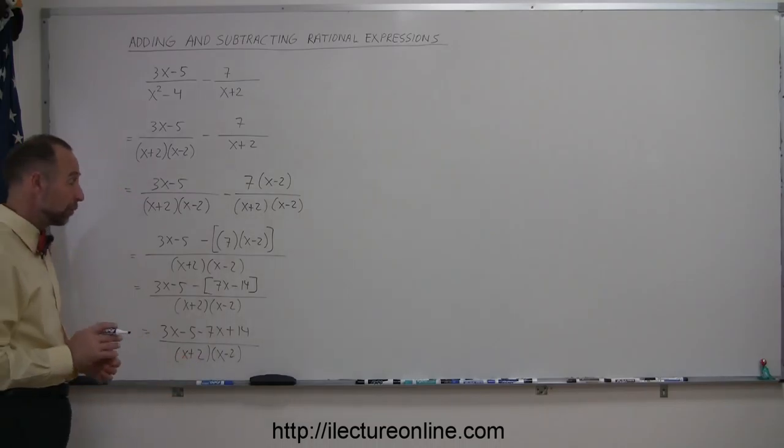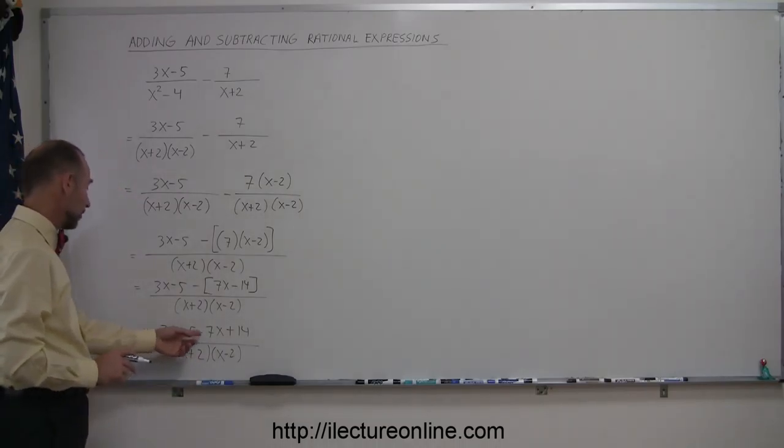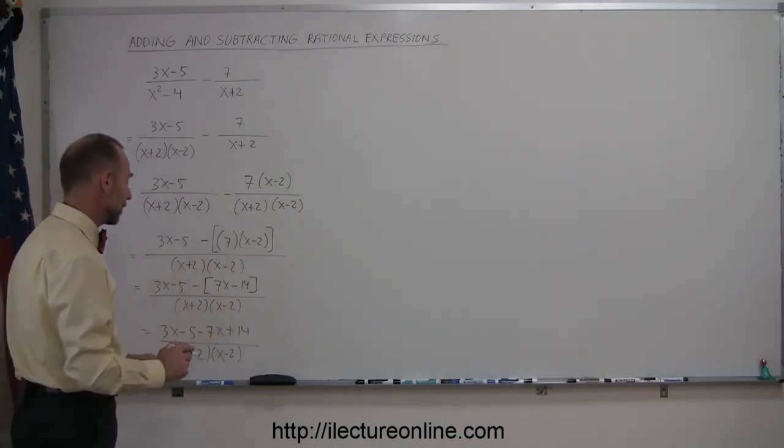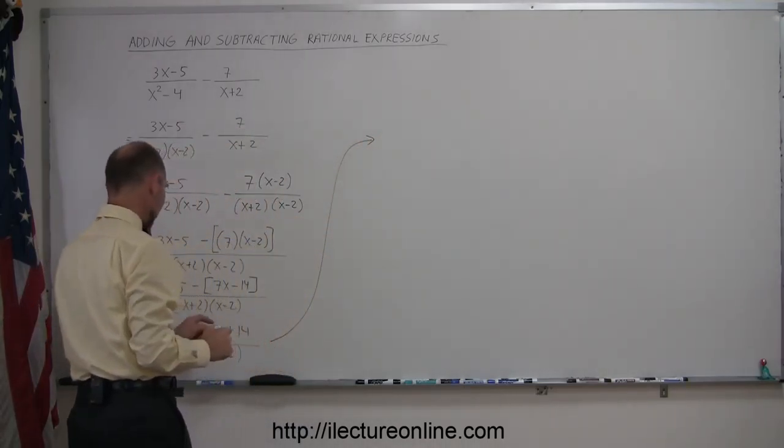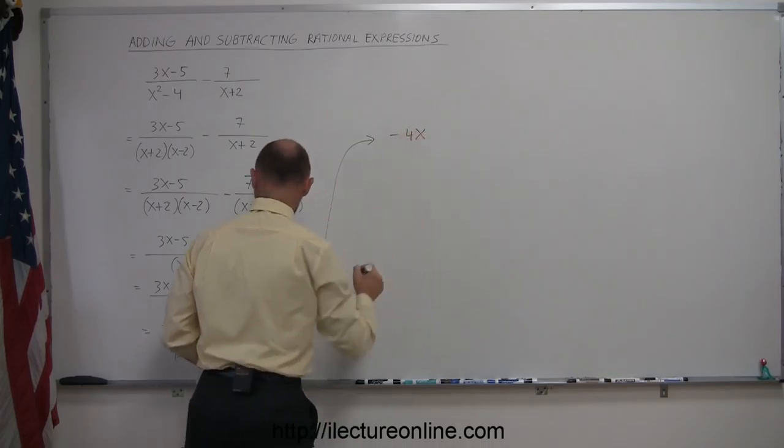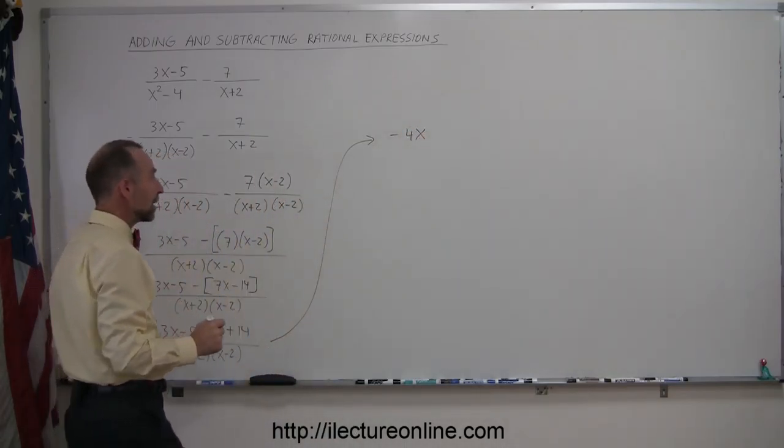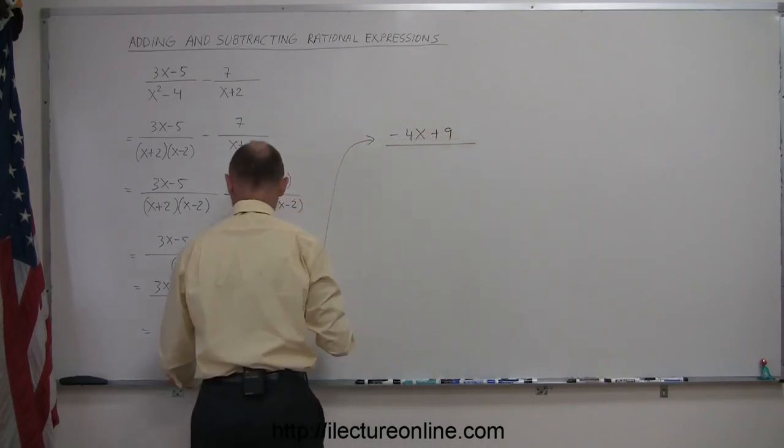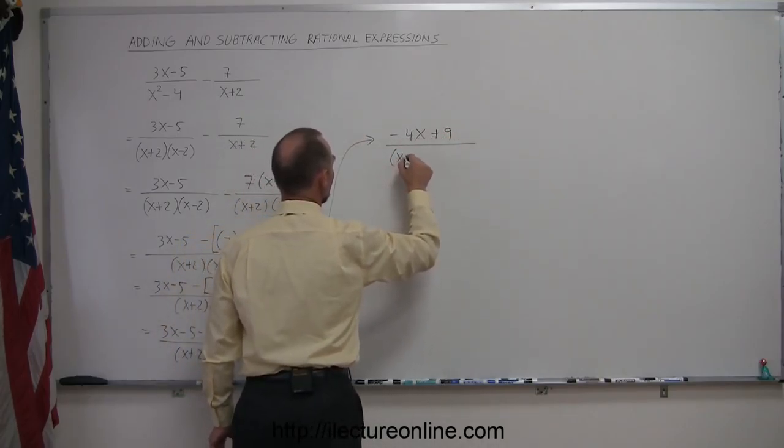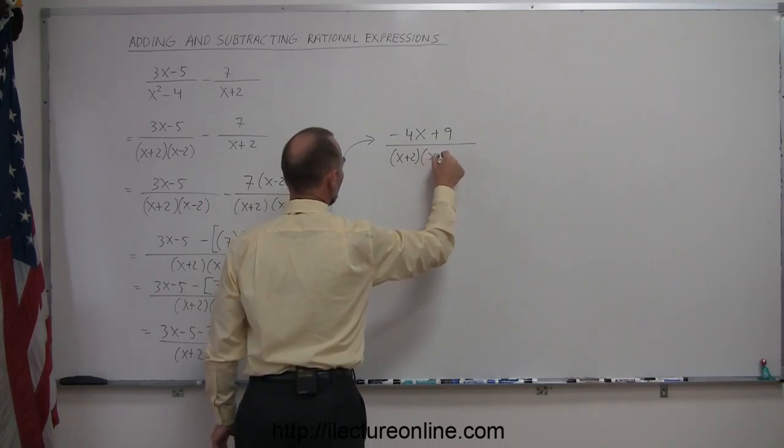Then, of course, you would want to combine like terms. We have a 3x and a -7x, a -5 and a 14, so we're going to combine those. So 3x-7x is -4x, and -5+14 is +9, and divide the whole thing by (x+2)(x-2).